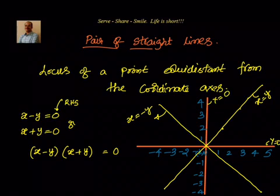Take one point on the first line x equal to y. Let us say the point is something like (2,2). Let us take another point on the other line, which is (3, minus 3). Now suppose I substitute (2,2) in this, the equation is satisfied.